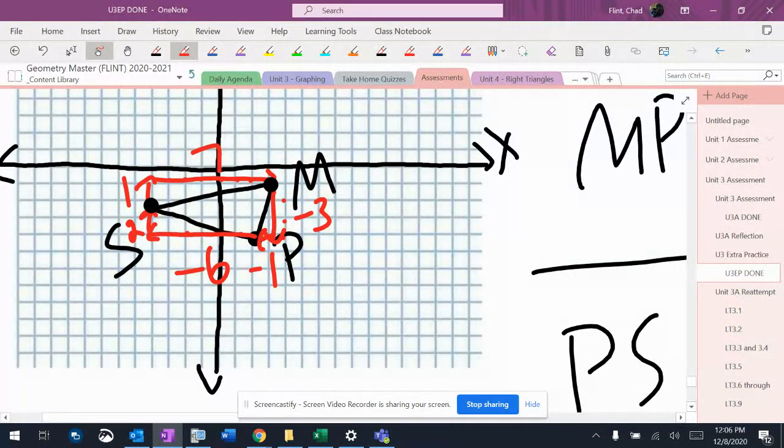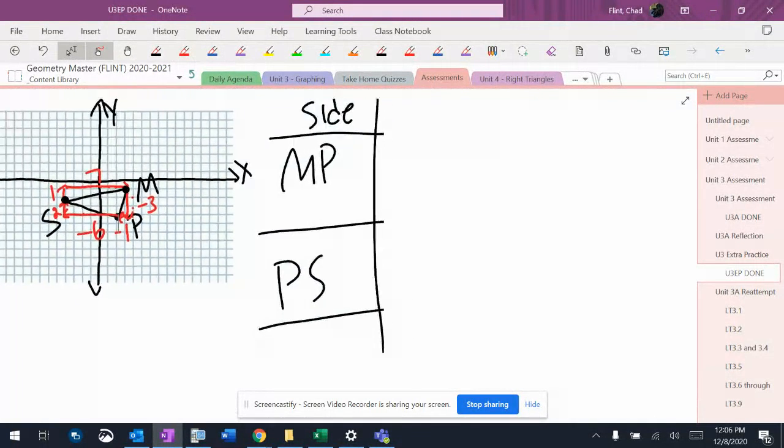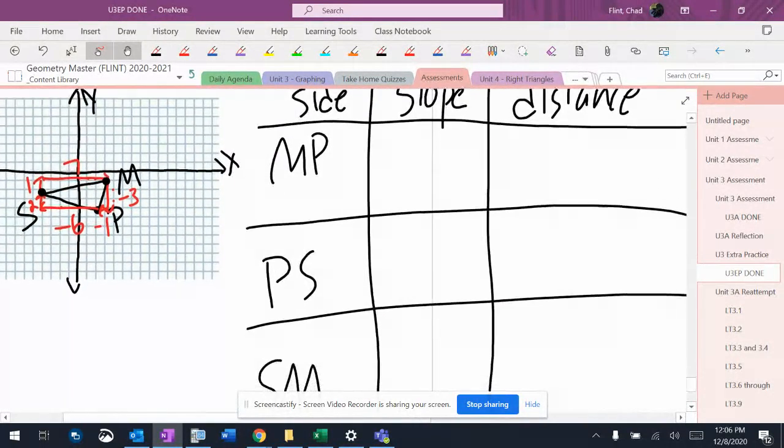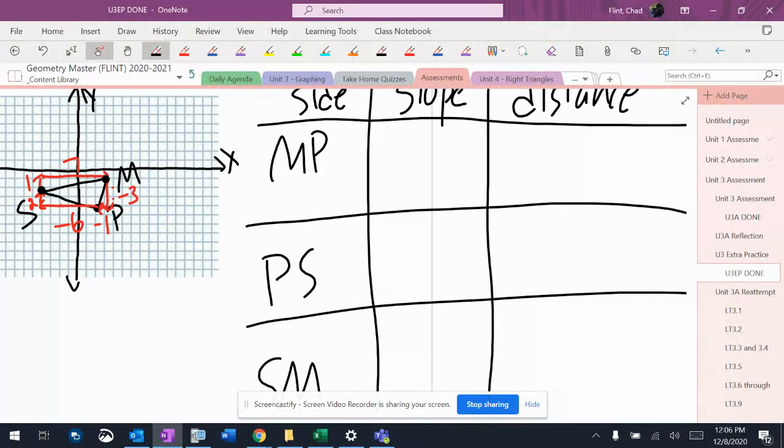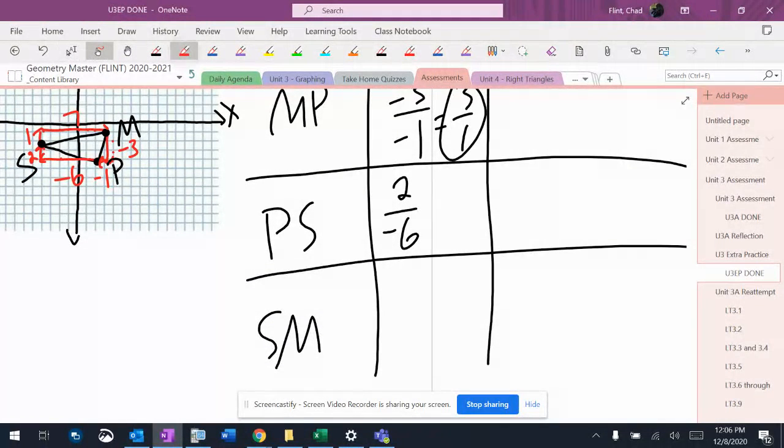Now I'm going to put my slopes down. So MP is down three, left one, which is three over one. Wait, negative - positive three. P to S is up two, left six. And then S to M is up one, right seven. So there's my slopes.